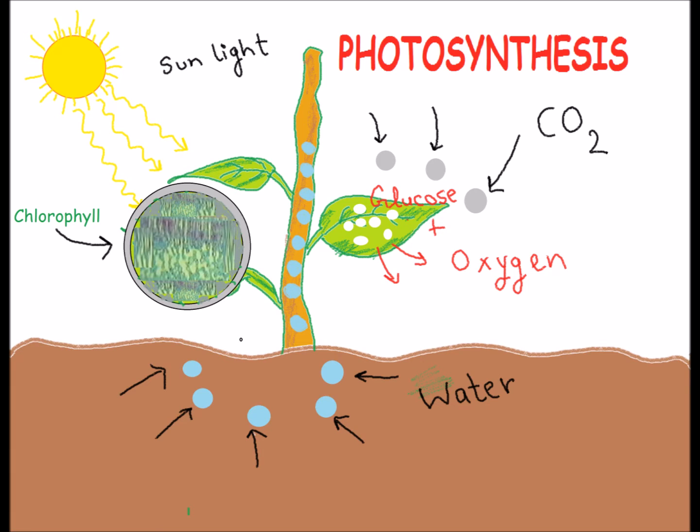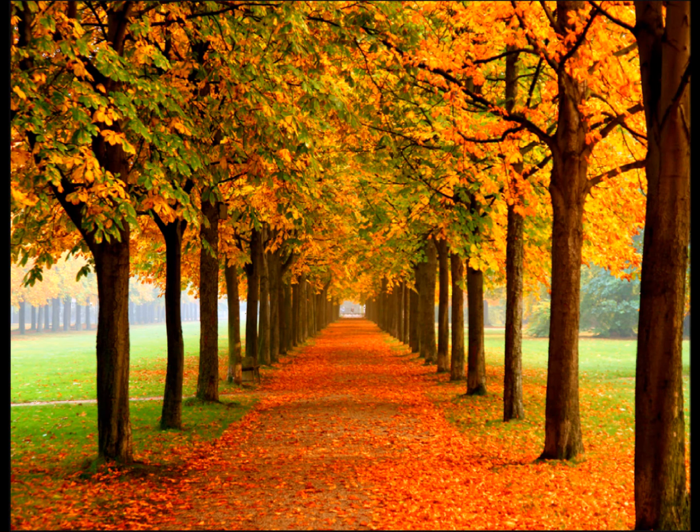During winter, trees don't get enough water and sunlight for photosynthesis. They stop making food and green chlorophyll disappears from the leaves.